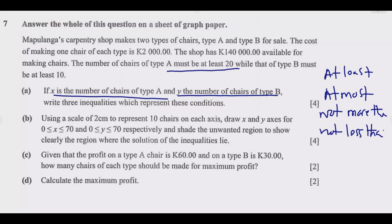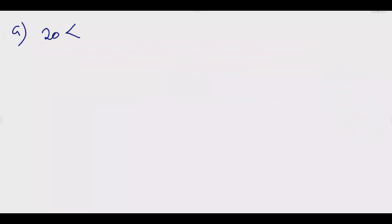We've been told X represents type A, so we don't need to assume anything. Type A must be at least 20, meaning 20 is the minimum value of X. So we write: 20 ≤ X, which is the same as X ≥ 20. This is the first inequality.